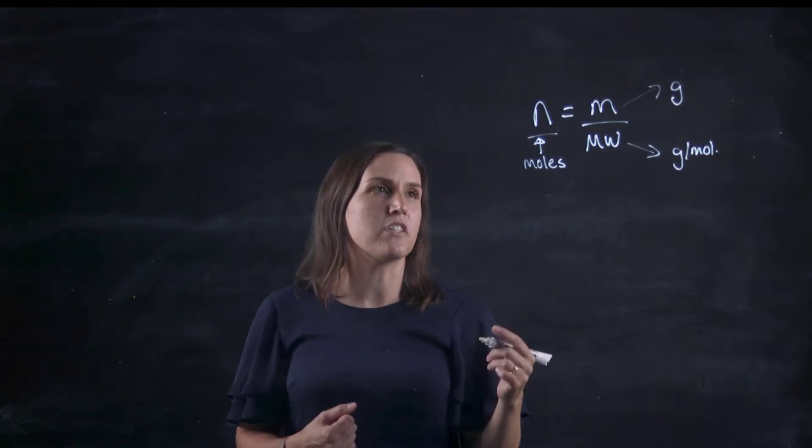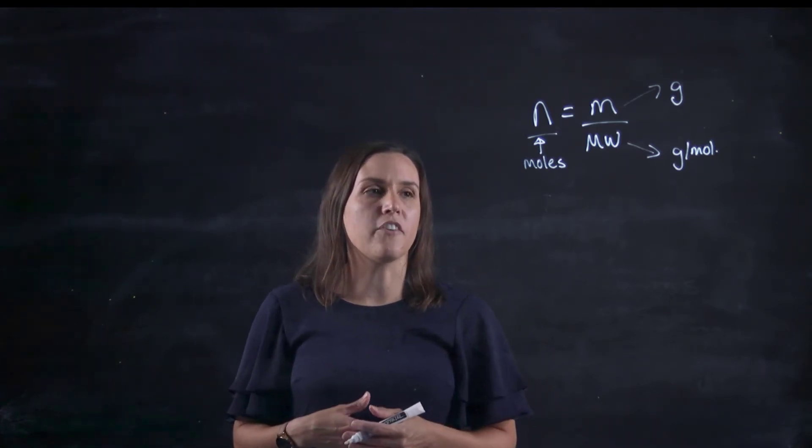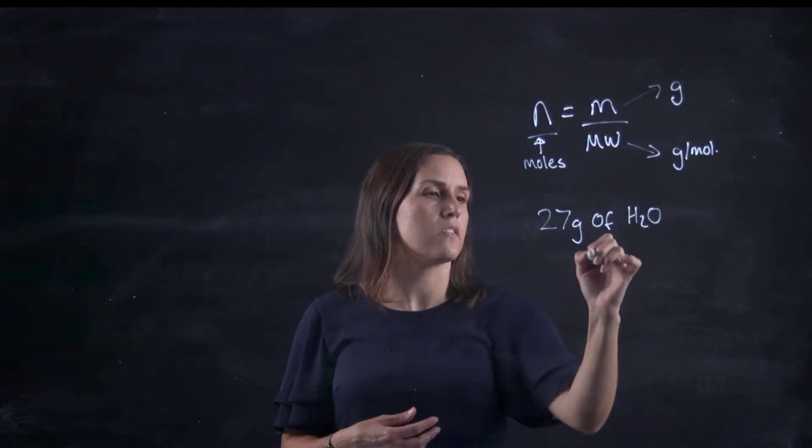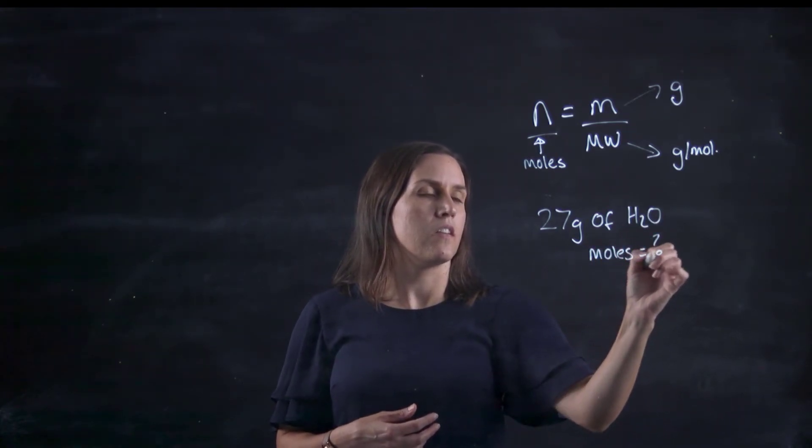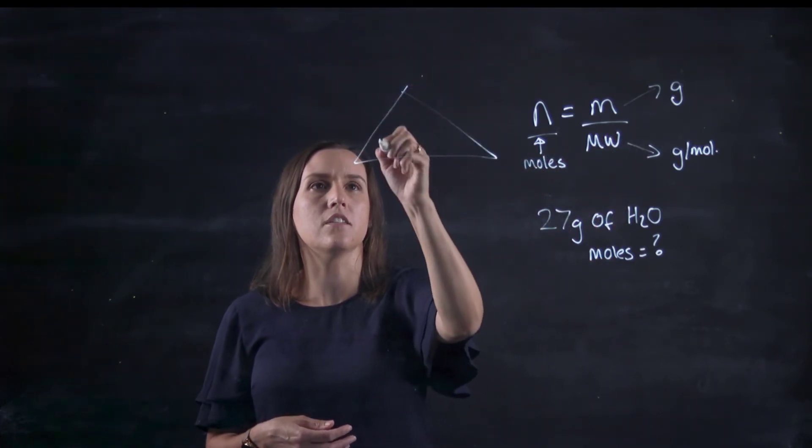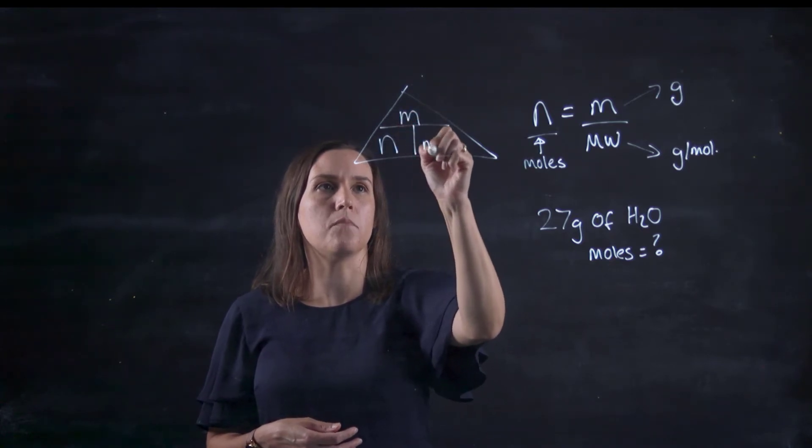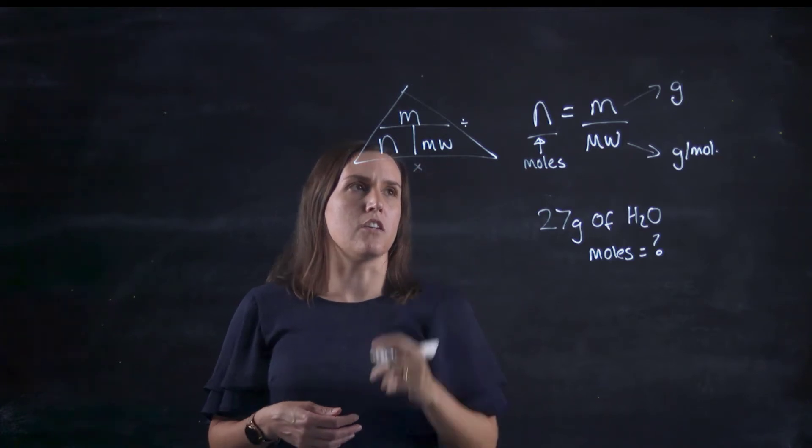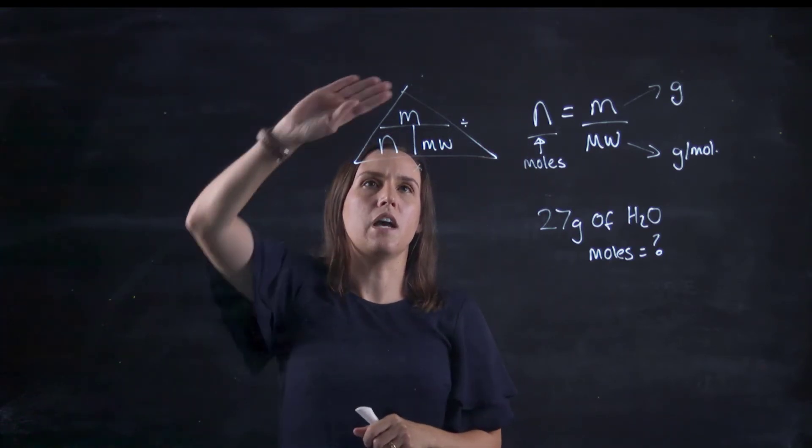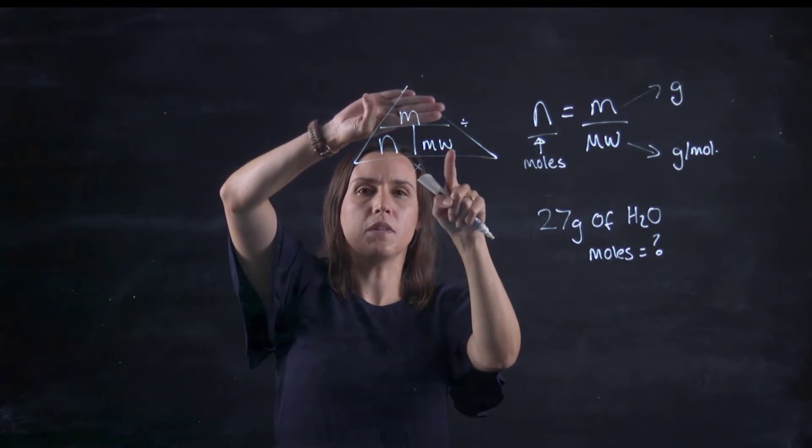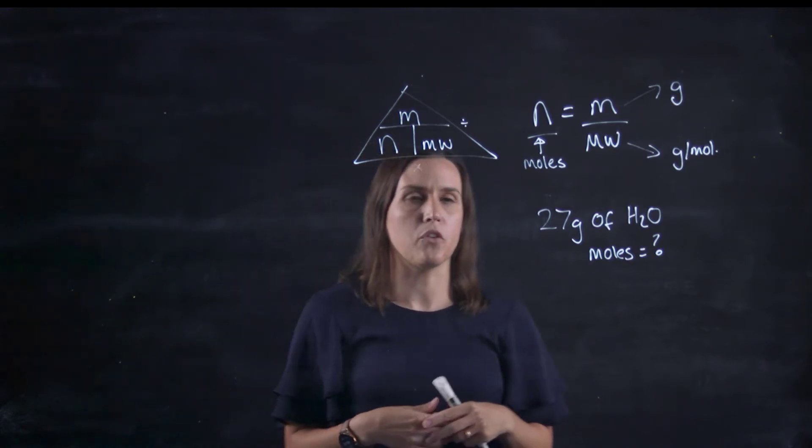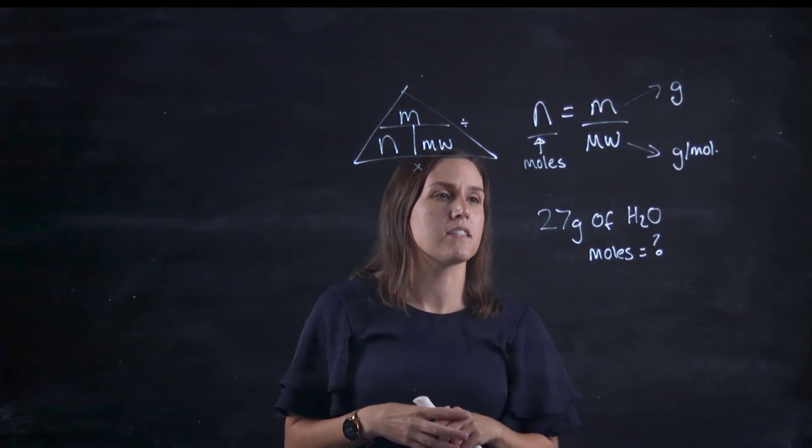Now let's try a simple question. I want to know how many moles are in 27 grams of H2O. How would I do that? I would go to my formula. You might see it as a triangle. Number of moles is the mass divided by the molecular weight. This is your division line, this is your multiplication. If I'm looking up moles, it's the mass divided by the molecular weight.